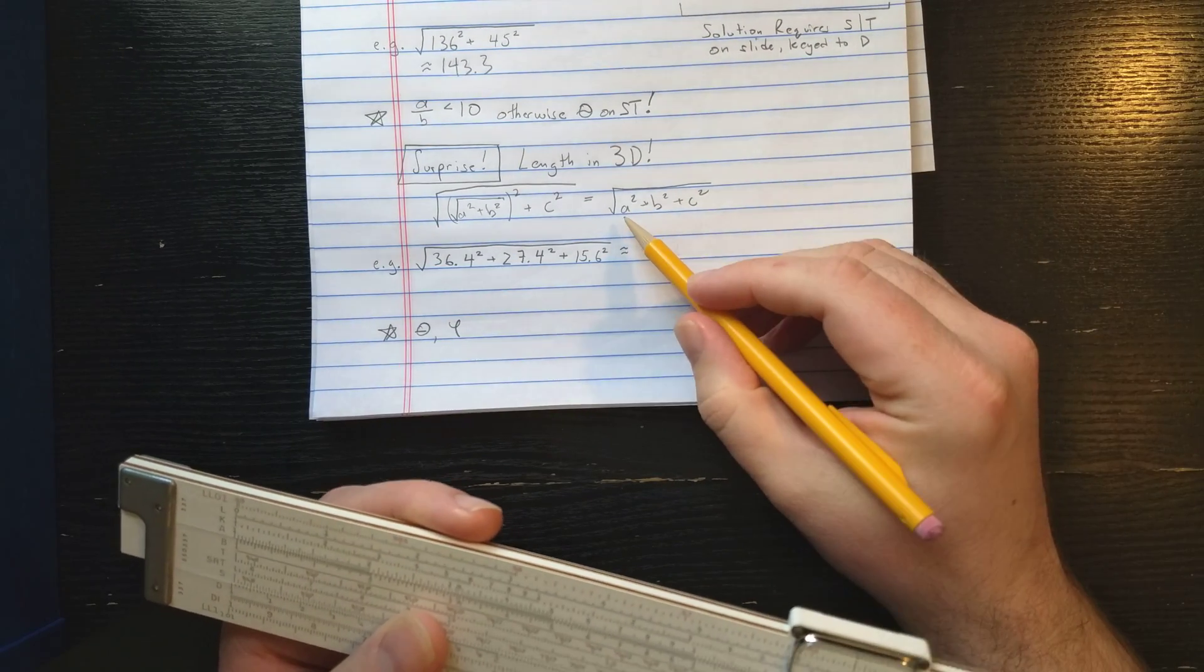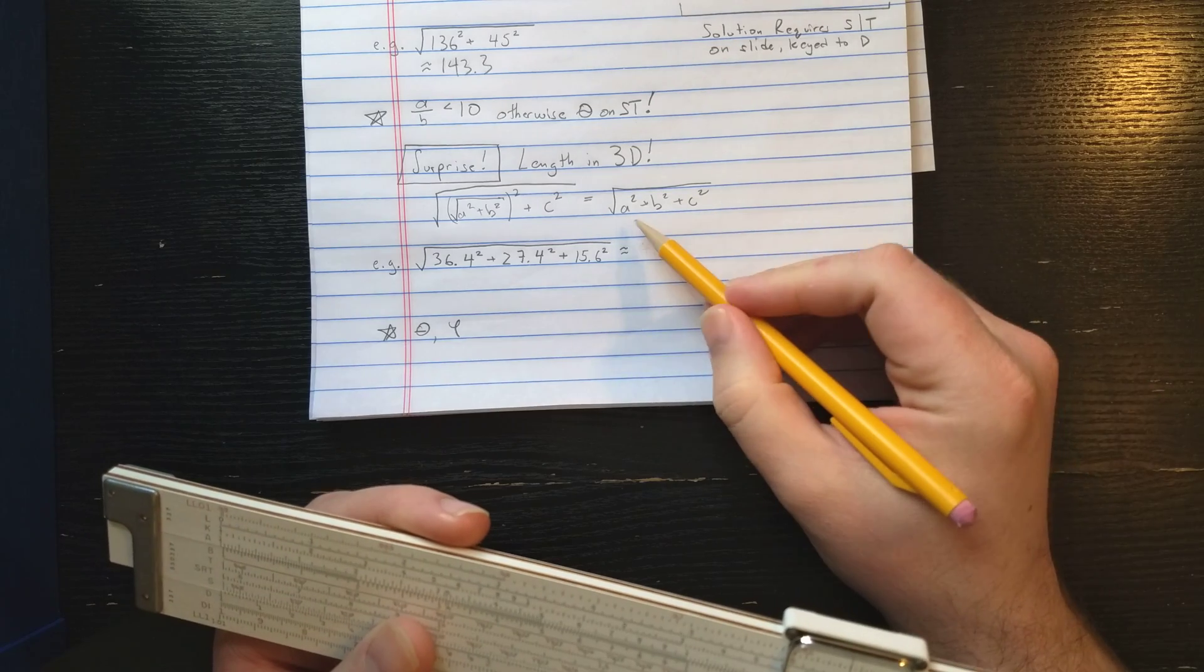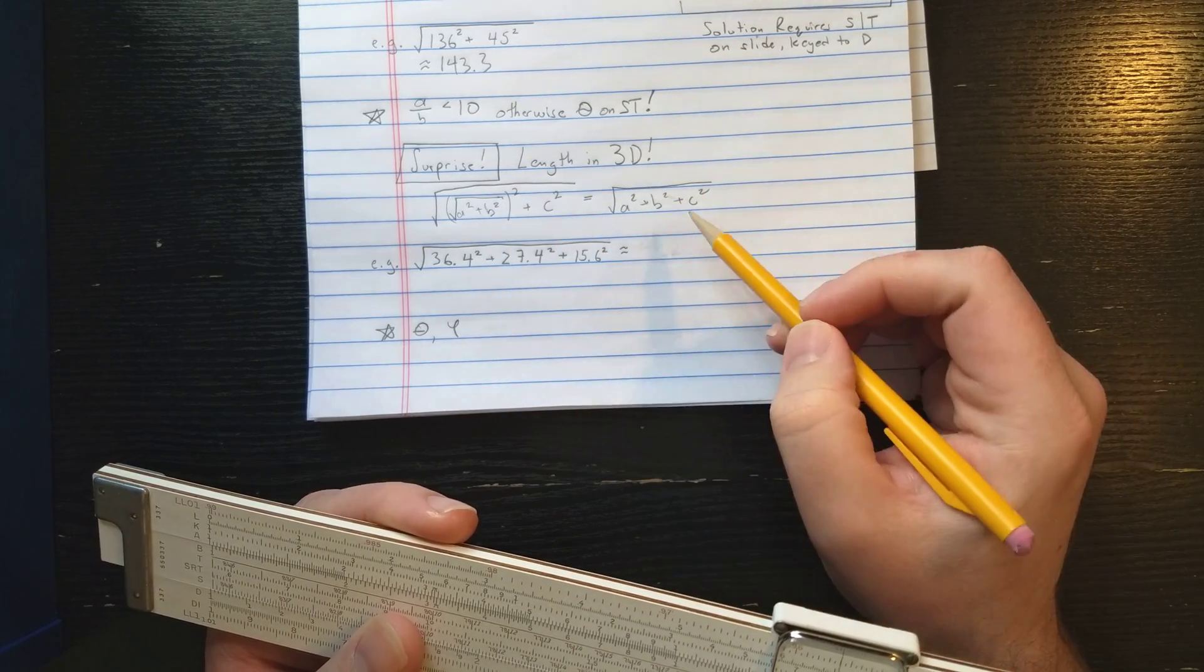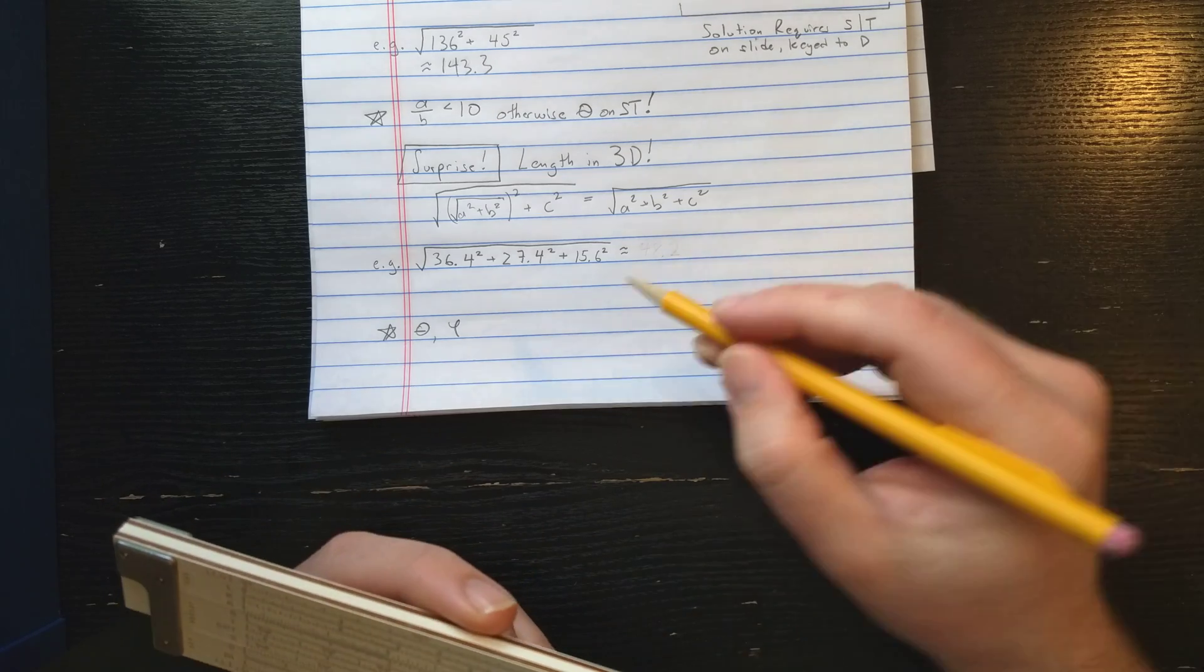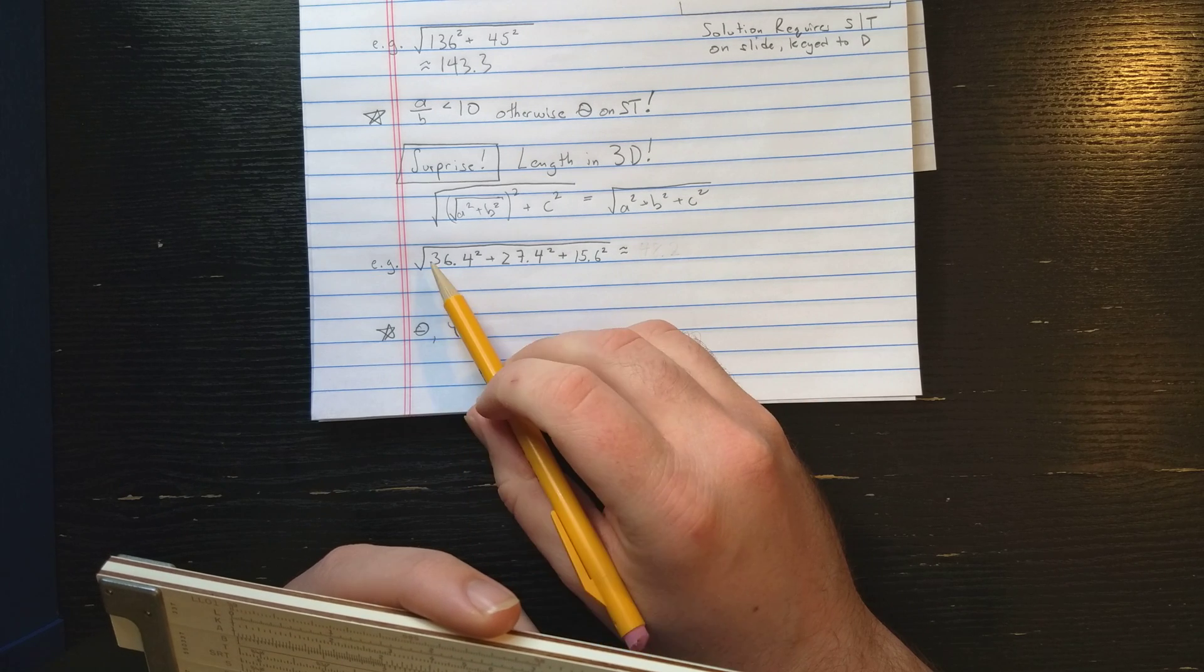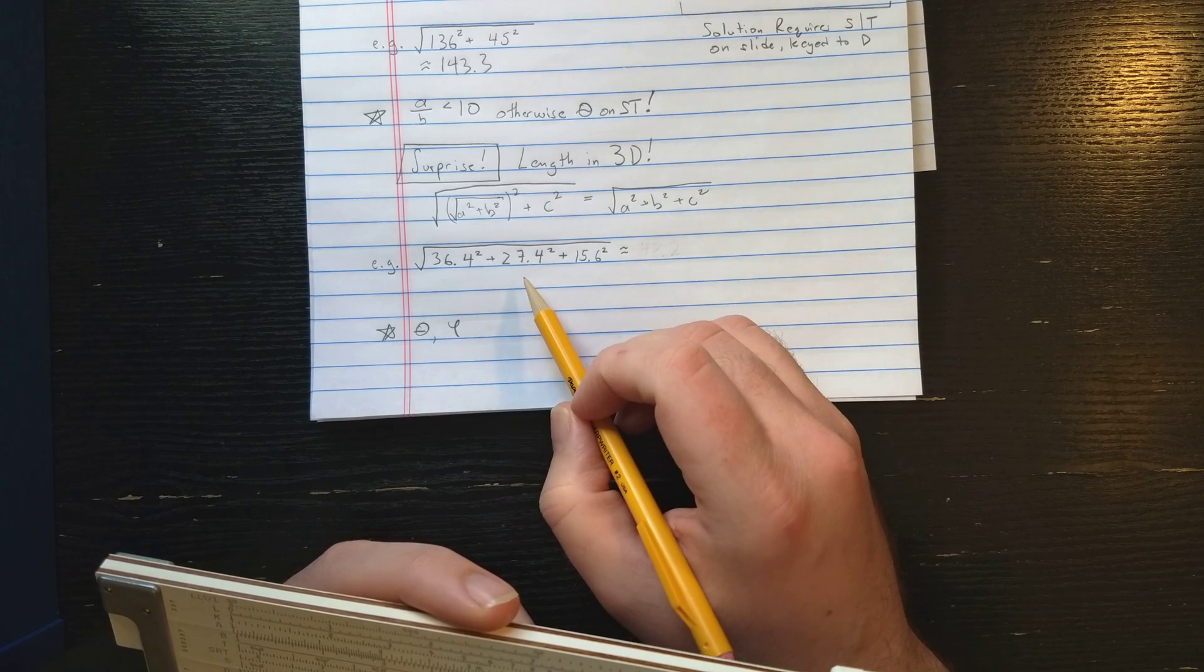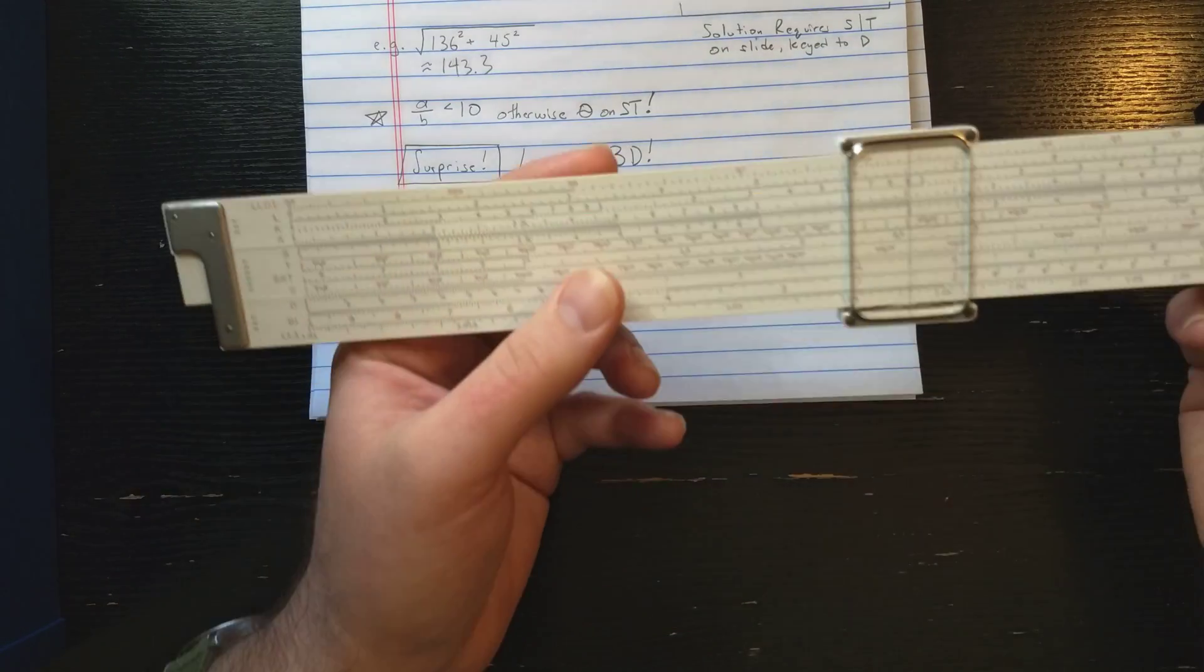Again, you want to attack this large to small. And you want to look at that ratio, both the first time A to B and the second time that result to C, to see if you're going to go over 10. In general, these numbers should be close together. Let's look at this example, square root 36.4 square plus 27.4 square plus 15.6 square. Let's see if we can do that.